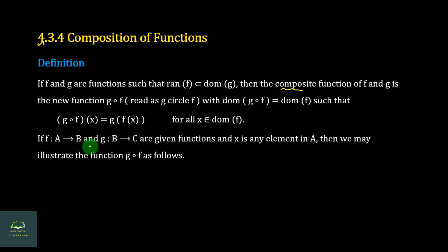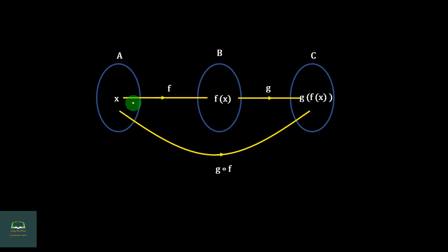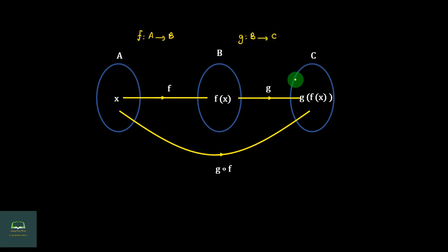If f is a function from A to B and g is a function from B to C are given functions — f is a function mapping A to B, g is a function mapping B to C — and h is any element in A, then h is an element we can pick. We may illustrate the function composition of f as follows. G is a function from A to B and g is a function from B to C.